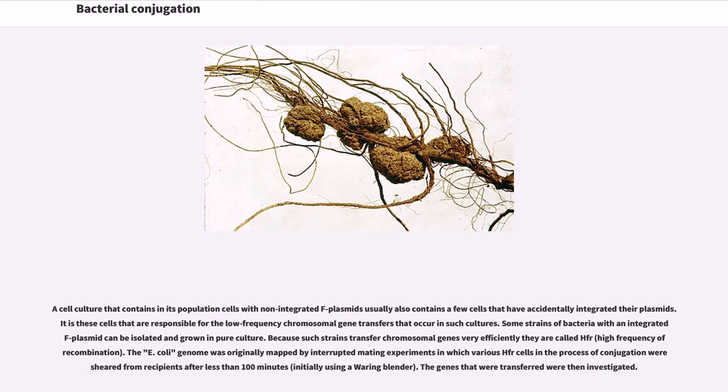The E. coli genome was originally mapped by interrupted mating experiments in which various Hfr cells in the process of conjugation were sheared from recipients after less than 100 minutes, initially using a Waring blender. The genes that were transferred were then investigated.